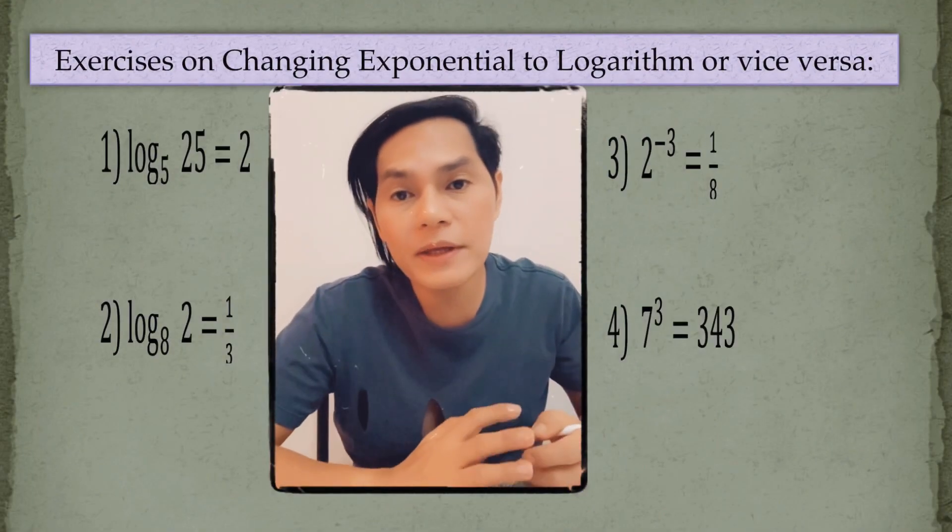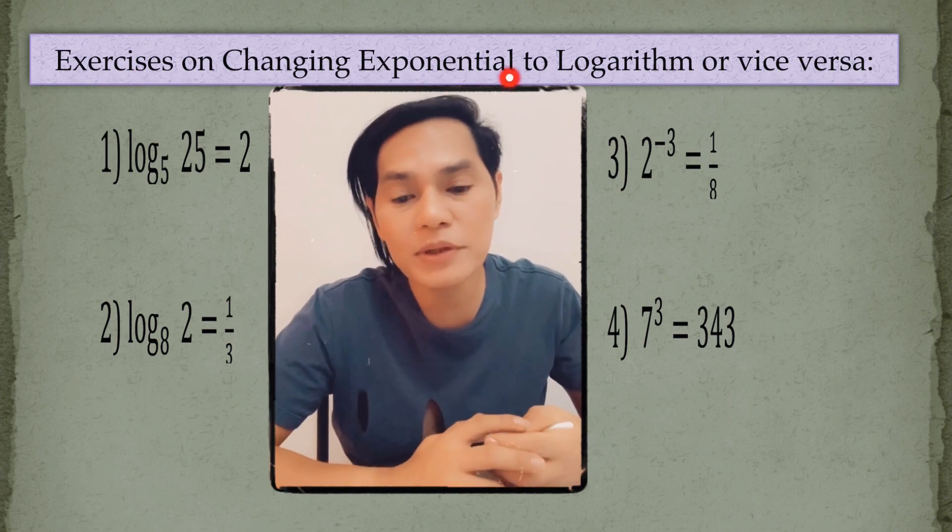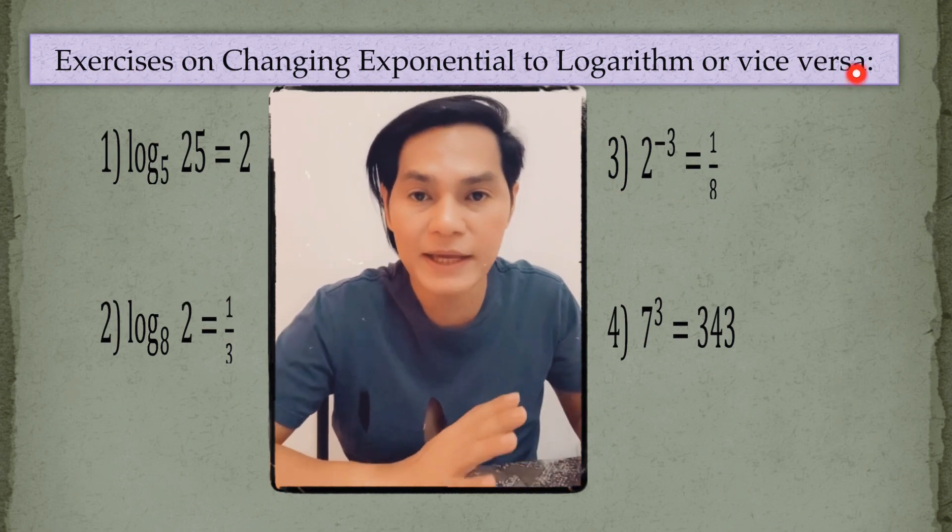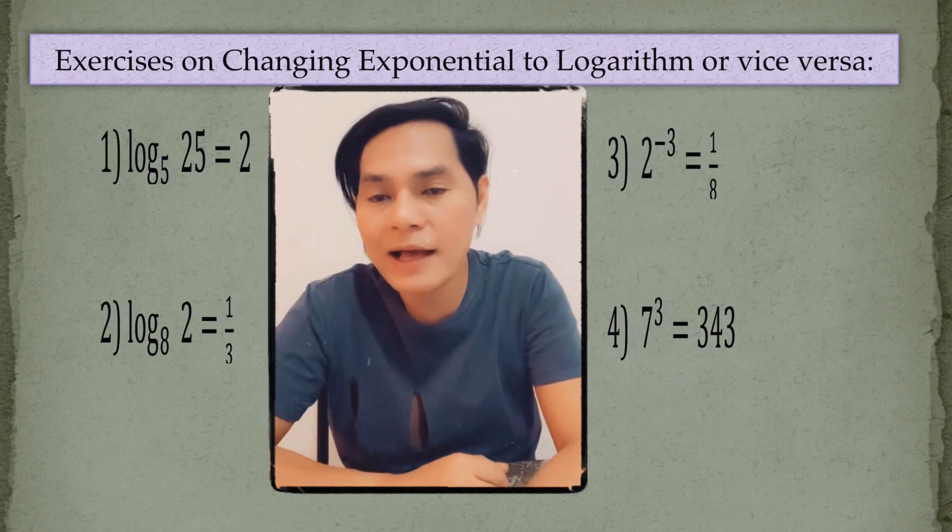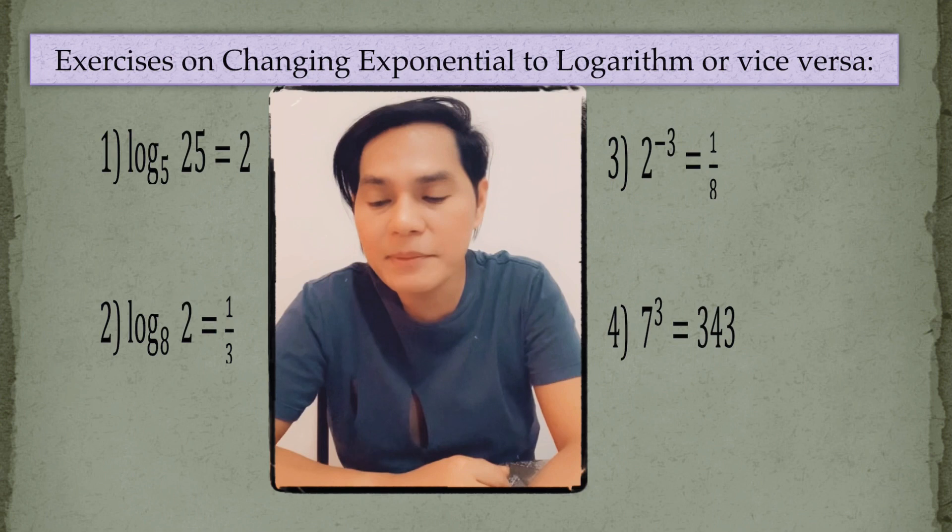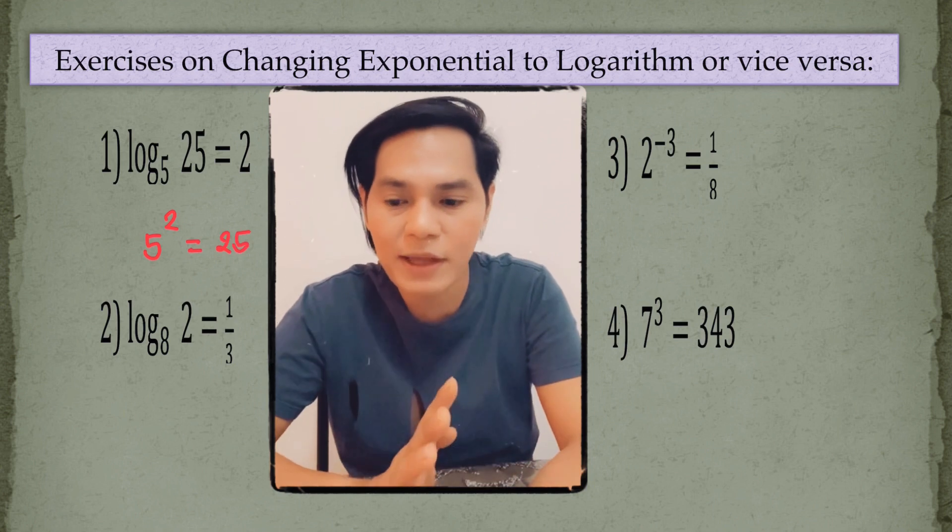Let's do the following exercises on changing exponential to logarithm or vice versa. So, number 1, I have here log of 25 to the base 5 is equal to 2. Just simply, the base here is 5. So, the equivalent is 5 to the power of 2 is equal to 25. So, that's how you do number 1.